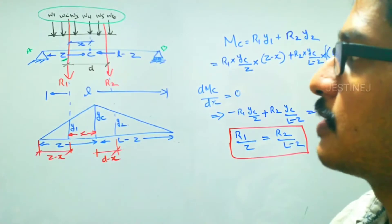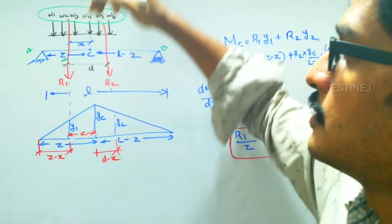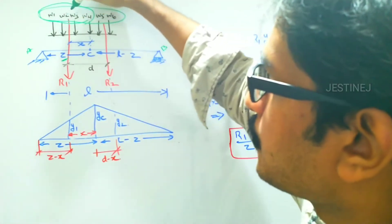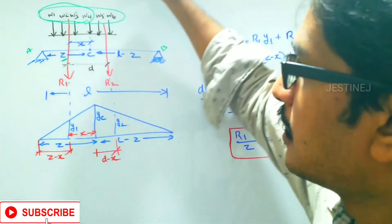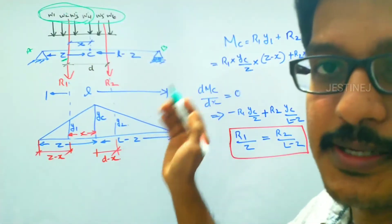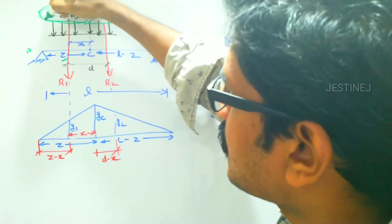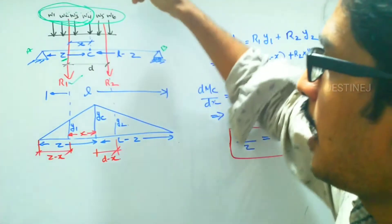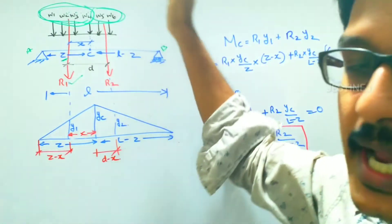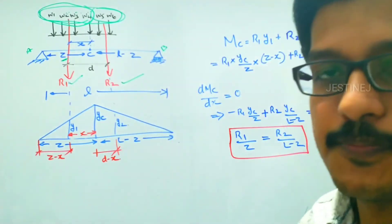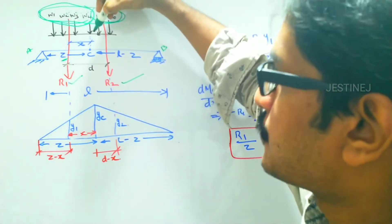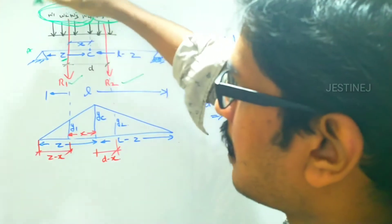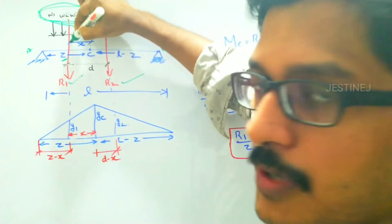We have to find out what loads are acting to the right and to the left. Loads W1, W2, W3, and W4 are acting on the left side and W5 and W6 are on the right side. The resultant of W1, W2, W3, and W4 is taken as R1, and the resultant of W5 and W6 acting to the right side is taken as R2. The distance from point C to the resultant R1 on the left side is taken as x.